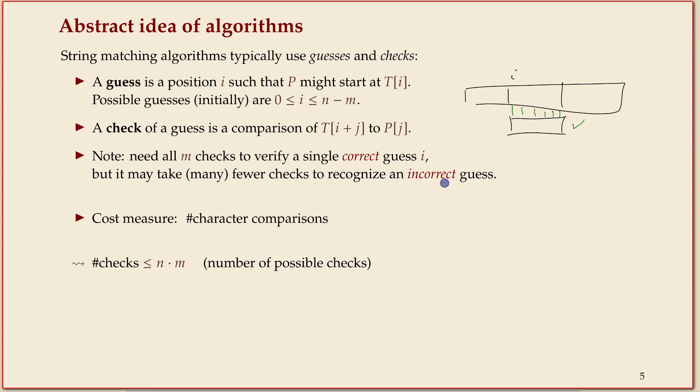Whereas to exclude a guess, to prove that the pattern does not start at this position, it might be enough to have one mismatching position. One incorrect character is enough to debunk that.